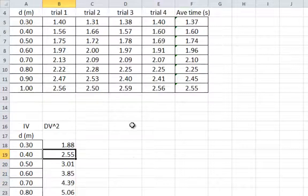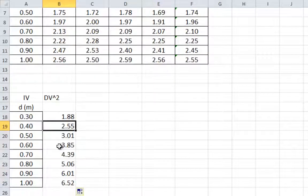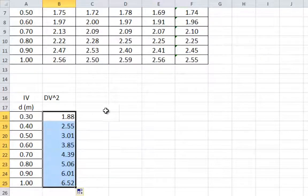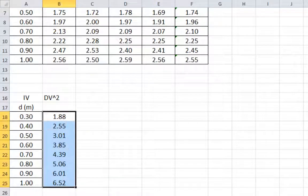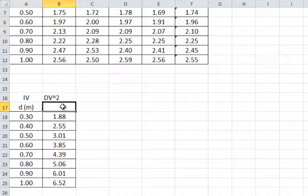Now we have 2.55 is 1.6 squared. You can have Excel do it for you or you can do it by yourself. But either way, you are going to have to square the time.